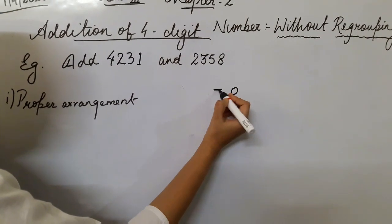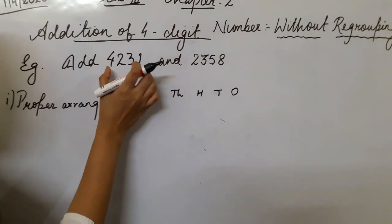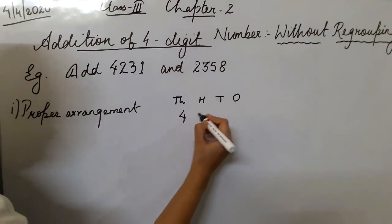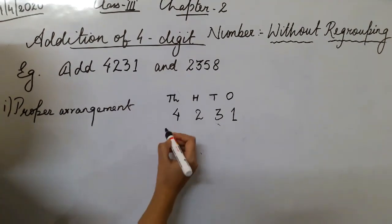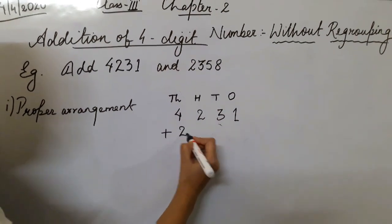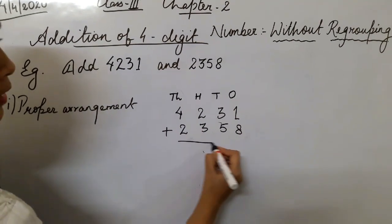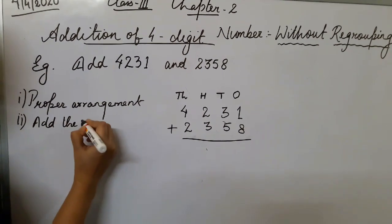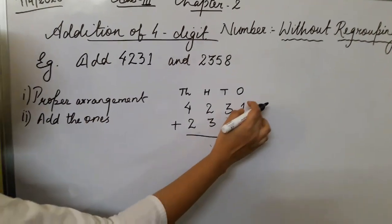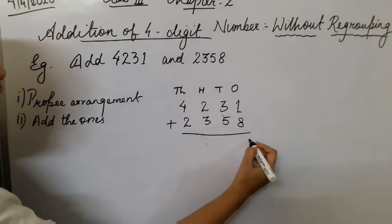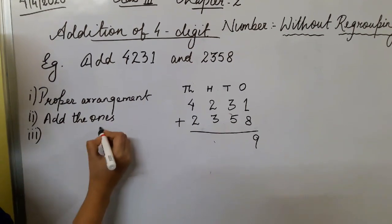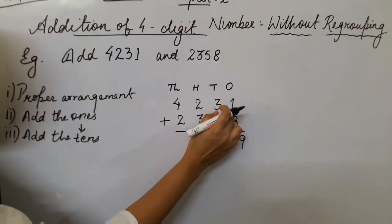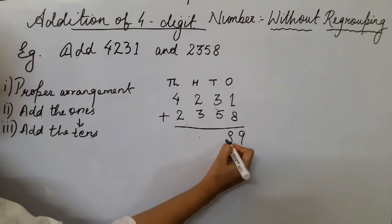After arranging the numbers in columns — ones, tens, hundreds, thousands — we write 4,231 and below it 2,358 with the addition symbol. Now the next step: add the ones. 1 one plus 8 ones is 9 ones. After ones, the next step is to add the tens: 3 tens plus 5 tens gives you 8 tens.